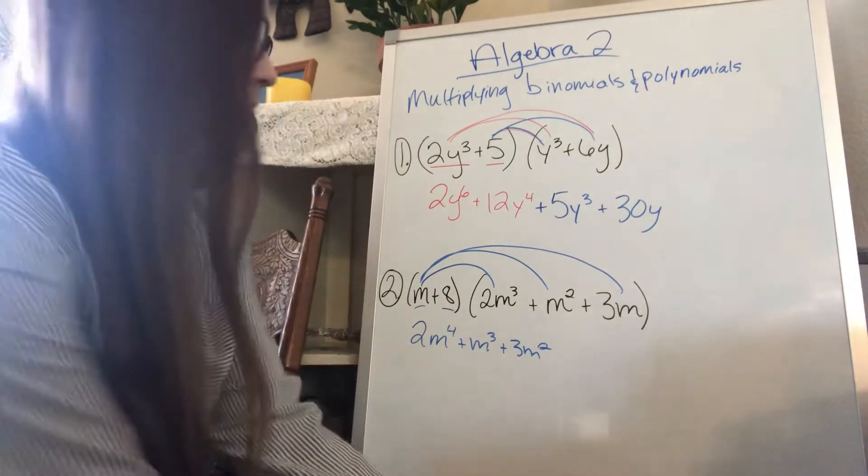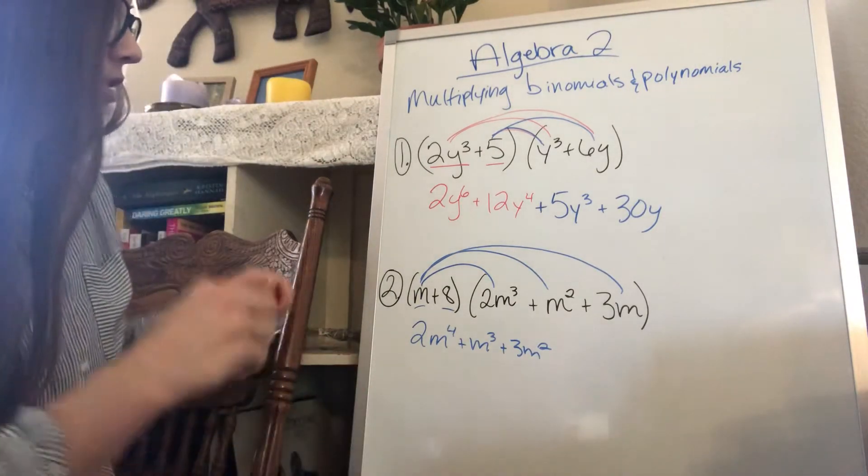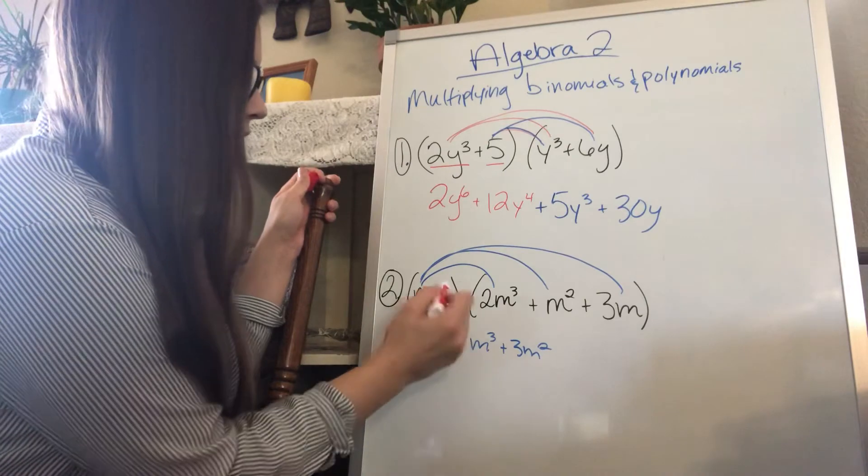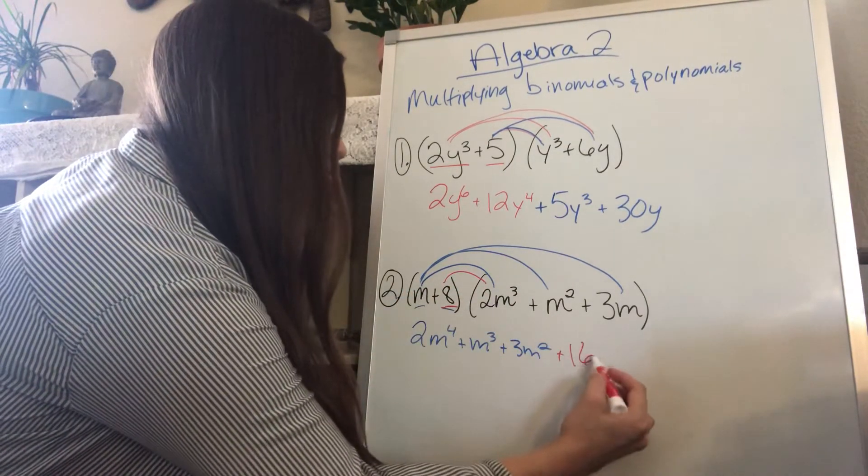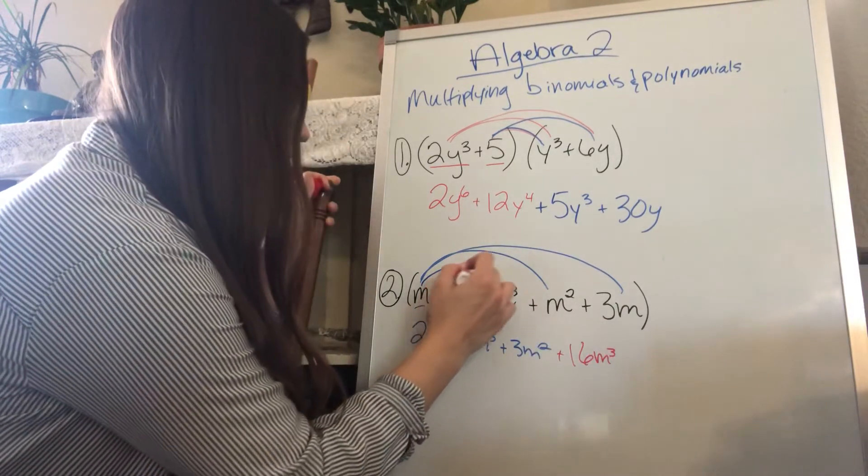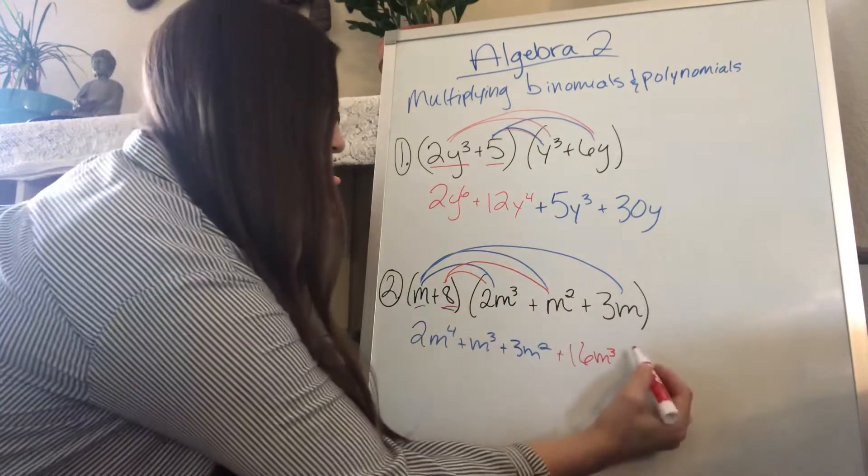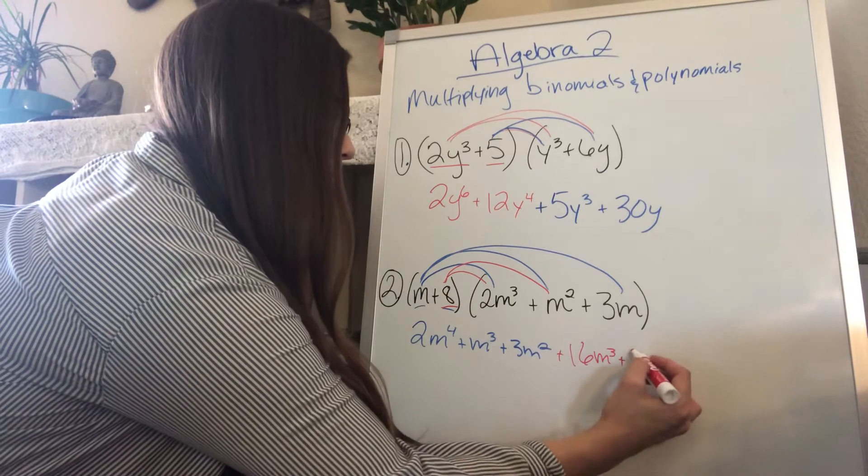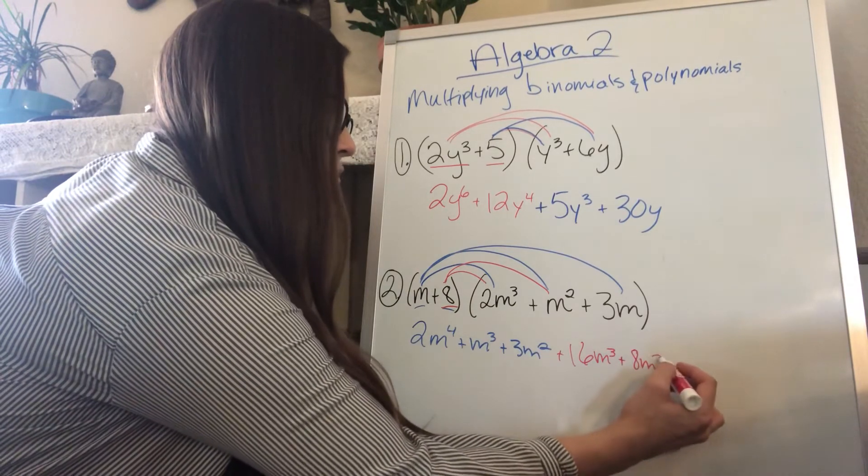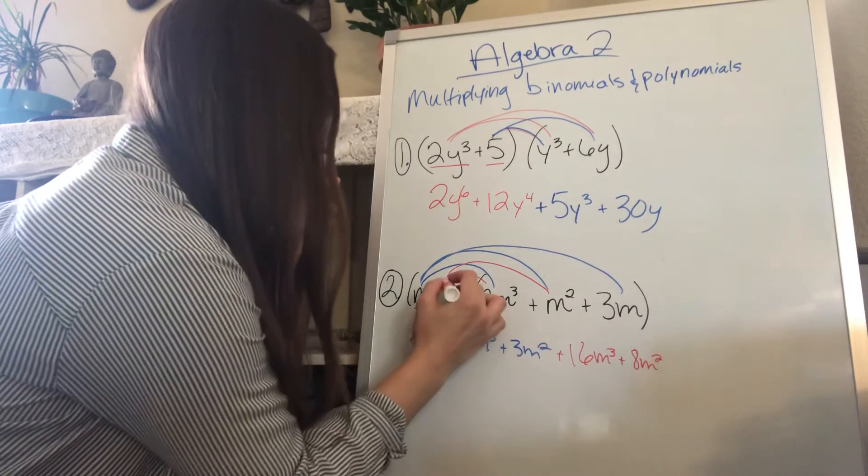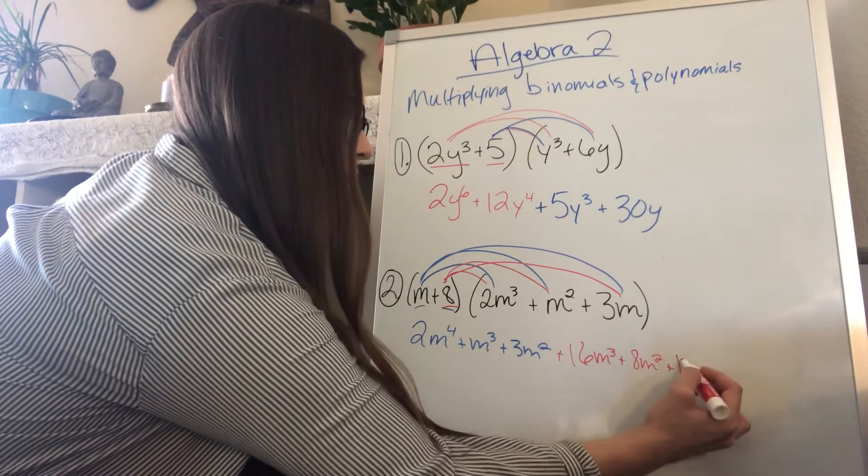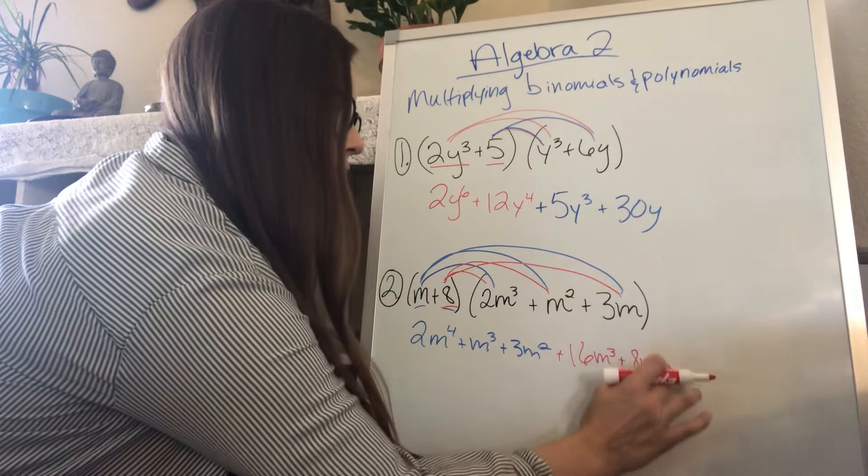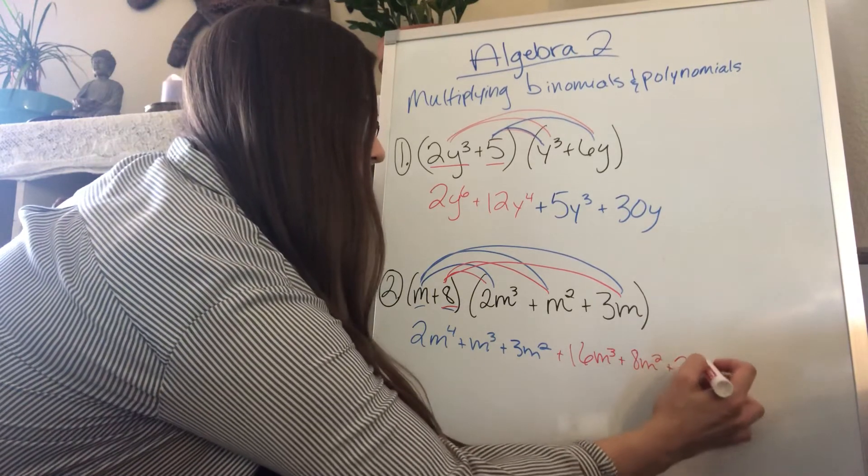I'm going to change colors so we can do the second term, which is the 8. So 8 times 2m cubed is going to be 16m cubed. 8 times m squared is going to be 8m squared. And 8 times 3m is going to be 24m.